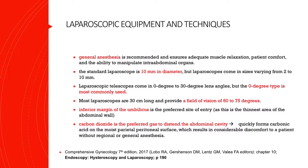For gynecologic laparoscopy, we usually prefer general anesthesia, which ensures adequate muscle relaxation, patient comfort, and the ability to manipulate intra-abdominal organs. The standard laparoscope is 10 millimeters in diameter, but laparoscopes come in sizes varying from 2 to 10 millimeters. Laparoscopic telescopes come in 0-degree to 30-degree lens angles, but in gynecologic laparoscopy we prefer the 0-degree type, although some laparoscopists prefer the 30-degree lens angle especially for total laparoscopic hysterectomy.